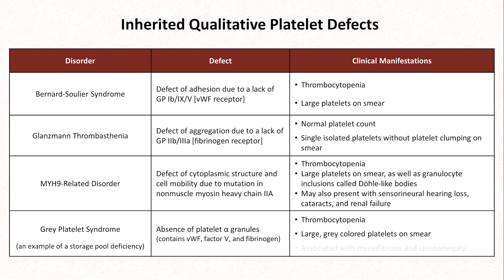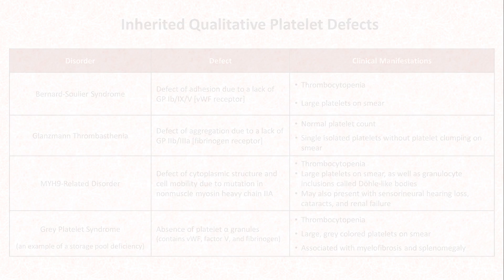Gray platelet syndrome is associated with myelofibrosis and splenomegaly. In all three of the disorders characterized by large platelets with low platelet counts — a situation also known as macrothrombocytopenia — automated cell counters may not consistently recognize the platelets due to their large size and may report even lower platelet counts than are actually present. That concludes this video on von Willebrand disease and the qualitative platelet disorders. The next video in this series on hemostasis will cover coagulation deficiencies such as hemophilia.